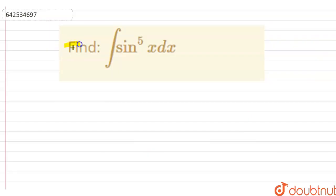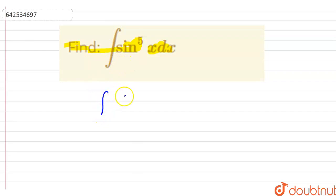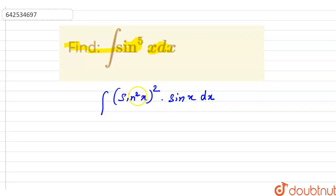Here the question is: find the integral of sin raised to the power 5x with respect to dx. In this question we will find the value of this integral which is sin raised to the power 5x. We can also write sin raised to the power 5x as sin square x to whole square multiplied by sin x, which gives sin raised to the power 4x times sin x — that is sin raised to the power 5x.